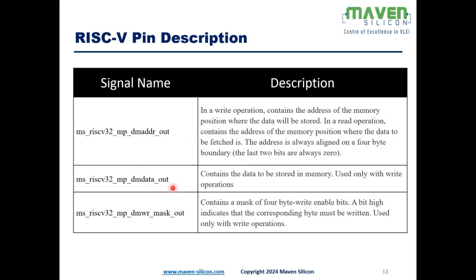DM_DATA_OUT is the data bus connecting to the data memory, containing the data to be stored; it is used only during write operations. DM_WRITE_MASK_OUT contains a 4-byte write-enable mask that indicates which corresponding byte is to be written, and is also used only during write operations.